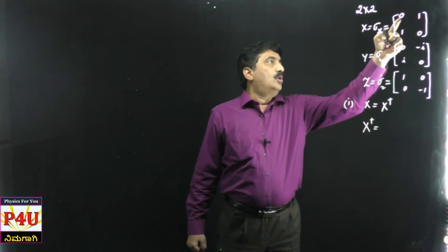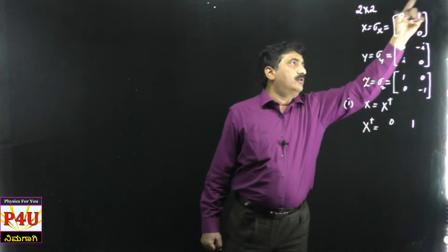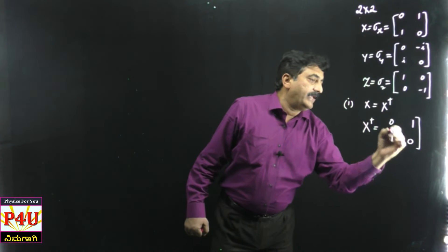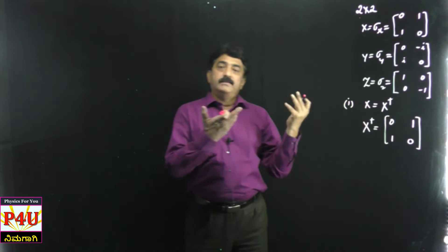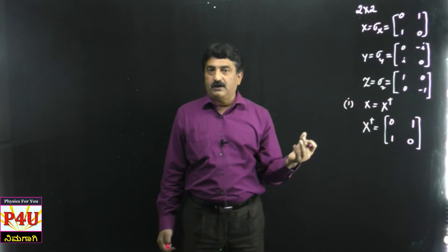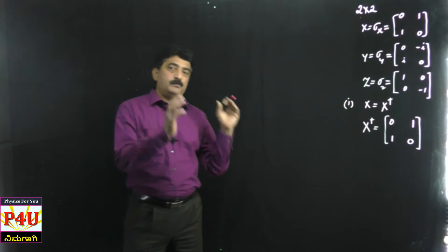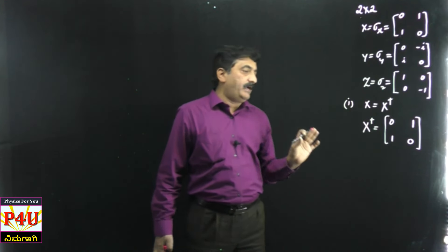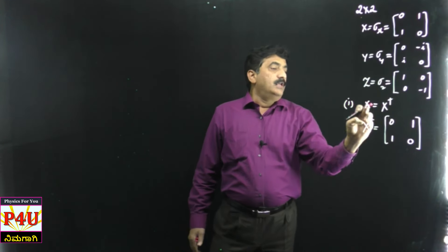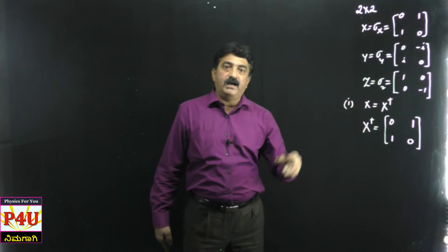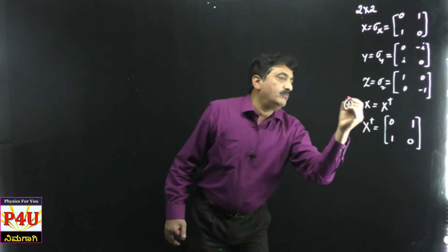Let me try only for X. How to find X†? X† means row should become column and column should become row. Since there is no complex number in X, the complex conjugate step doesn't change anything - transpose itself gives us the Hermitian. So X† = [0, 1; 1, 0], which equals X. This is what I said - the Hermitian and the matrix are the same.